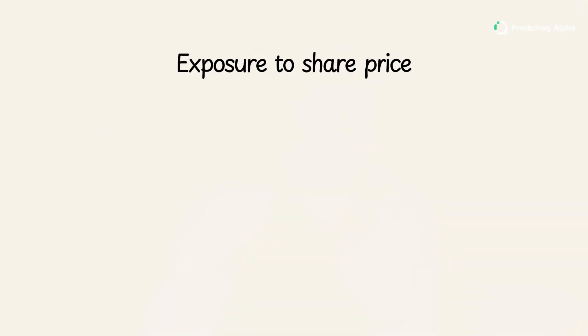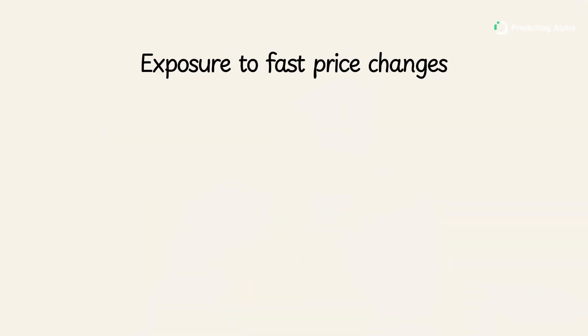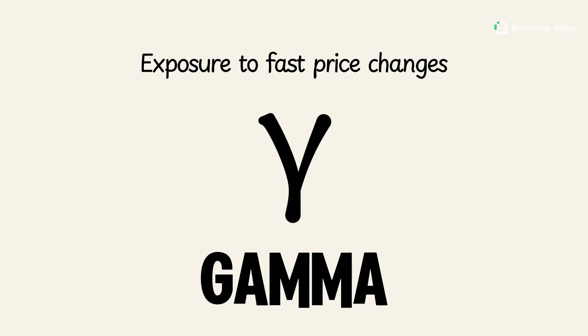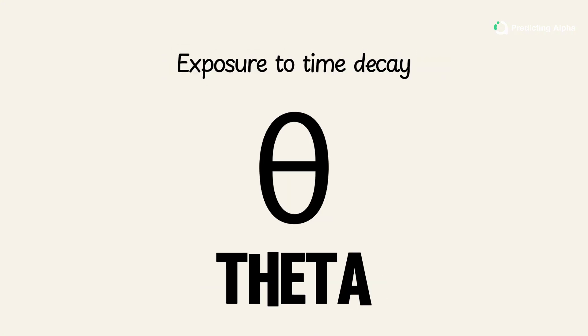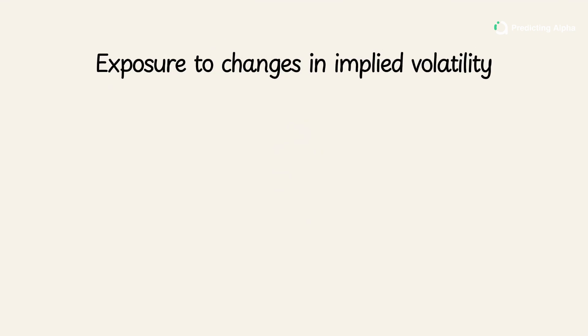There are many exposures, and we're talking about the main four in this video: your exposure to share price, which is called Delta; your exposure to how fast that price changes, which is called Gamma; your exposure to time decay, which is called Theta; and your exposure to changes in implied volatility, which is called Vega. These Greeks tell you how much of each type of exposure your position actually has.